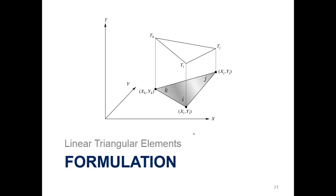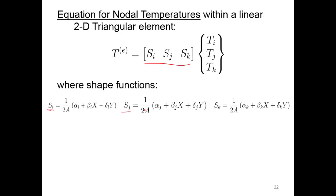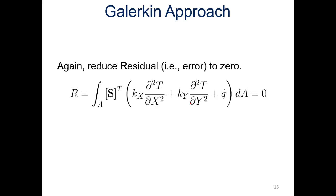Now let's look at linear triangular elements. The formulation uses global coordinates with nodes I, J, and K, and you can see a representative temperature profile on that element. The equation for nodal temperatures within a linear 2D triangular element is the shape functions times the temperatures at each node, with shape functions at nodes I, J, and K. The difficulty here is that we have extra alpha and beta terms to include. Using the Galerkin approach, we take the transpose of the row matrix of shape functions and multiply by the governing equation, integrating over the triangular area.